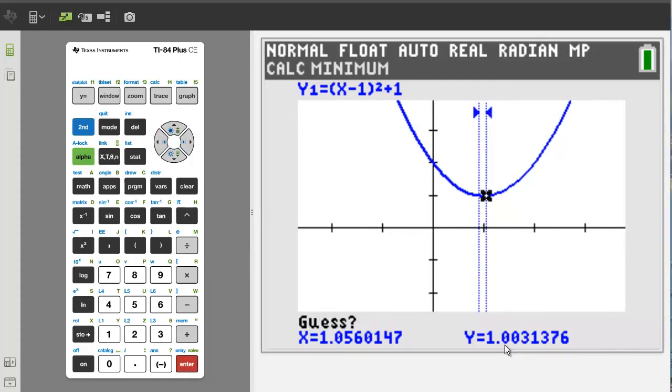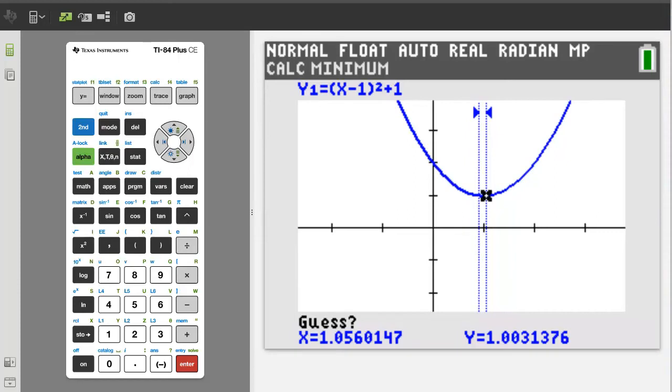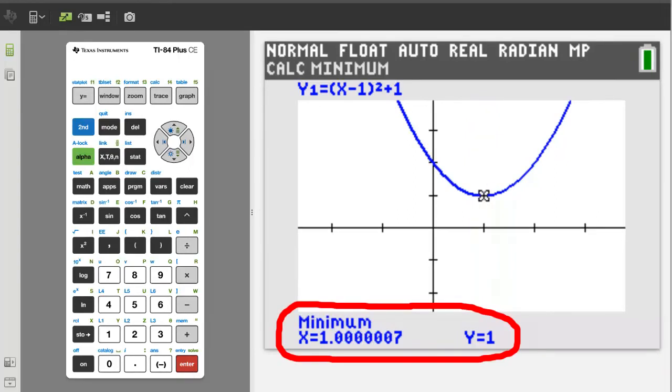Now it is asking you to take a guess. Don't guess, just press the enter button. So the vertex is at x equals 1 and y equals 1, or point.